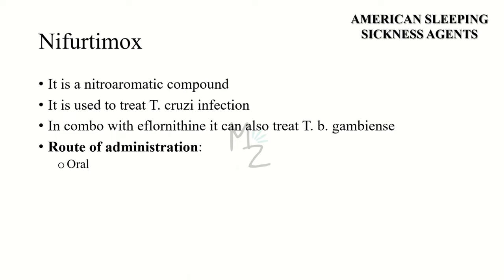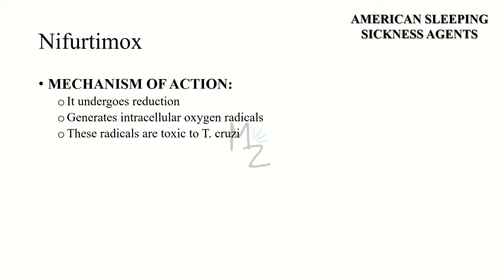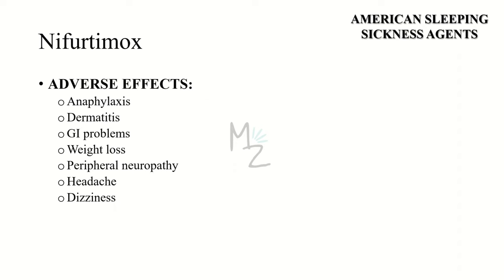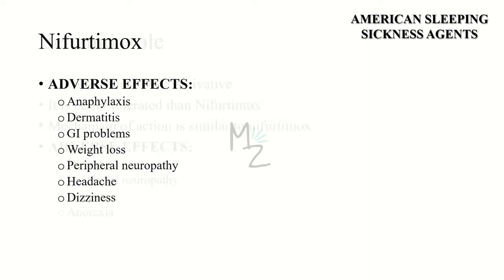The first drug for American sleeping sickness is nifurtimox, a nitroaromatic compound used to treat Trypanosoma cruzi infection. In combination with eflornithine, it can also be used to treat T. brucei gambiense infections. It is administered orally. Mechanism of action: nifurtimox undergoes reduction and generates intracellular oxygen radicals such as superoxide radicals and hydrogen peroxide, which are toxic to Trypanosoma cruzi. It is extensively metabolized and metabolites are excreted mainly in urine. Adverse effects include hypersensitivity reactions such as anaphylaxis and dermatitis, gastrointestinal problems severe enough to cause weight loss, peripheral neuropathy, headache, and dizziness.